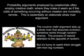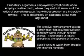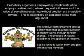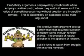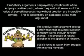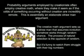Creative math. Probability arguments employed by creationists often use creative math, making it seem as if the odds of something occurring without creation are incredibly remote. This is essentially an elaborate straw man argument — the creative math argument sets up a straw man that assumes evolution somehow works through random chance. The process of natural selection is the opposite of random. But it's real funny to watch them struggle with their big numbers.